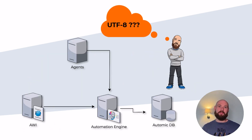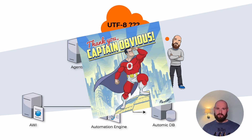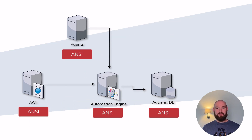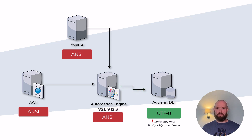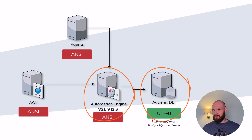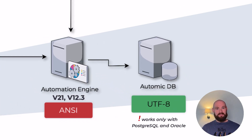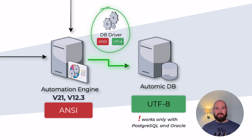Now you are probably wondering which components influence the subject of UTF-8 in the architecture of Automic. In short, Unicode can be utilized only by the components that have been specifically developed for UTF-8. The good news is that you can actually run your database with UTF-8 character encoding even if your Automic version does not support UTF-8 at the moment. This means the converted database can be used with Automic version 21 or 12.3. It is therefore very advisable to convert your database to UTF-8 first, before upgrading to an Automic version that supports UTF-8. In this constellation, it is very important that the database driver performs the character conversion on the fly. The database connection must therefore be set to the encoding of the application, so that the driver can mediate between the UTF-8 encoding of the database and the ANSI encoding of the application.